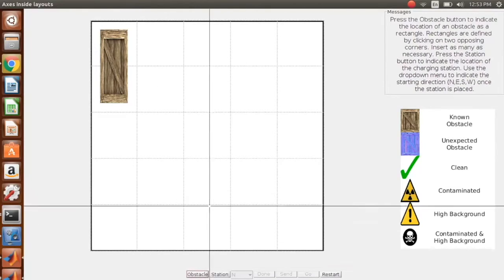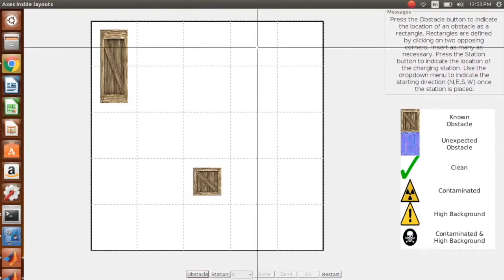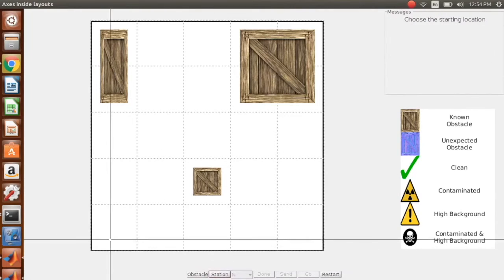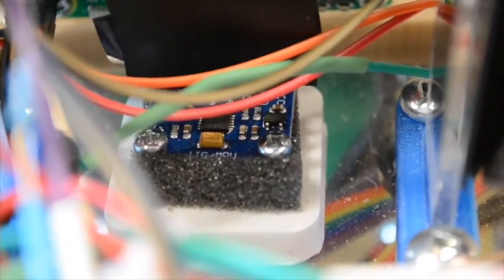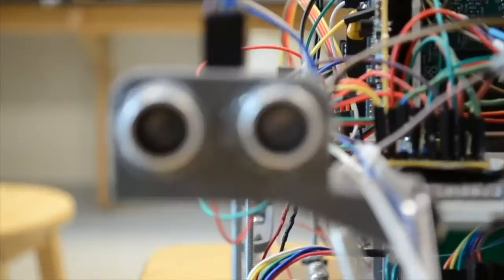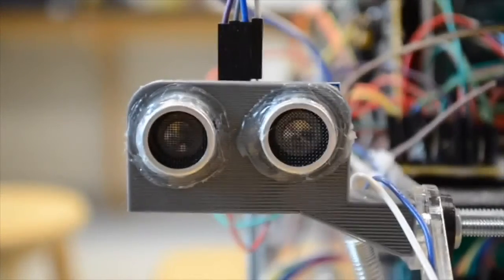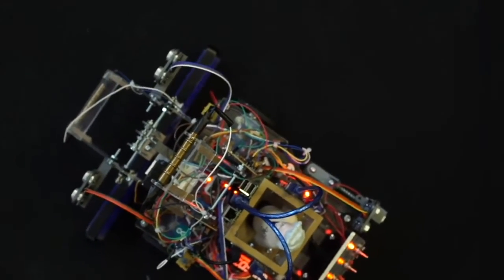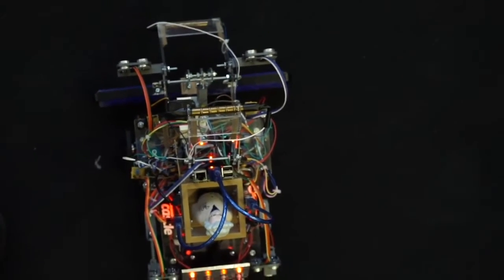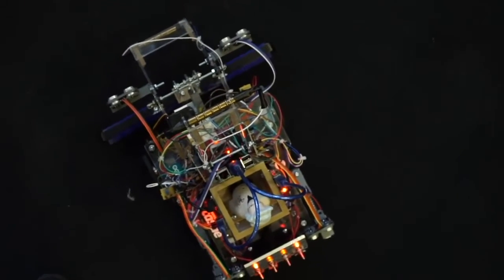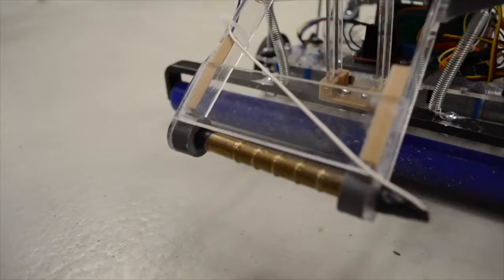To operate the RadRover, the user need only input information about the room into an intuitive computer program. The path the rover will take is then displayed. The user can then go home while the RadRover gets started on its journey. Using an inertial measurement unit capable of measuring acceleration, hall effect motor encoders, and ultrasonic sensors, the RadRover can drive with centimeter precision. It can do this without any external guidance such as a line on the floor. This capability means the RadRover can operate in large facilities and can adapt to changing routes.